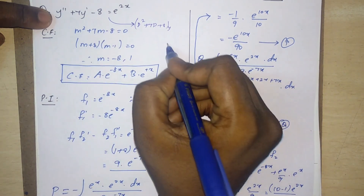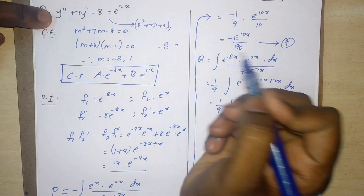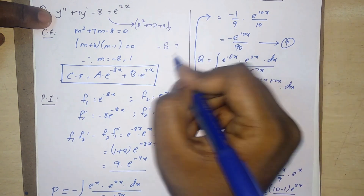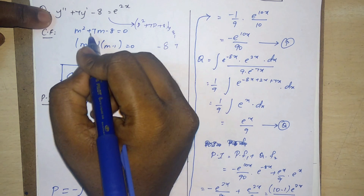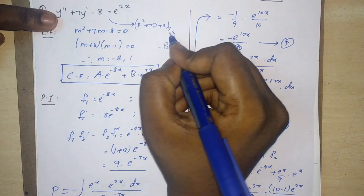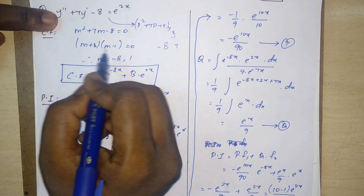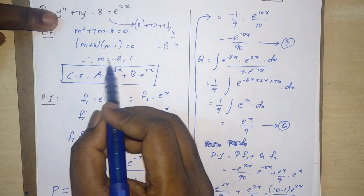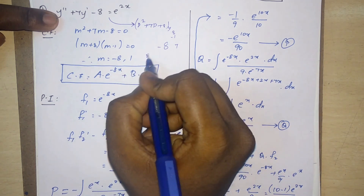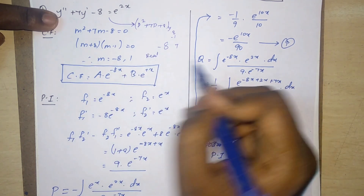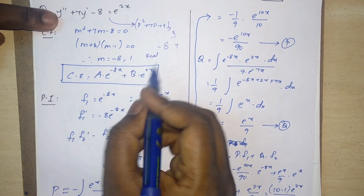To solve m² + 7m - 8 = 0, we factor: multiply to get -8 and add to get 7, giving factors 8 and -1. So (m + 8)(m - 1) = 0, giving m = -8 and m = 1, which are real distinct roots.